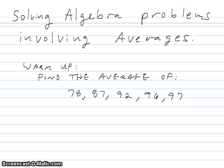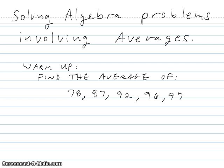Here I have a warm-up question for you. We have five numbers: 78, 87, 92, 96, and 97. I want you to first take a guess at what the average of those five numbers is, and then calculate the average by adding them up and dividing by five. Try to estimate what the average might be, and then verify that by adding them up and dividing by five to see how good of a guess you made.